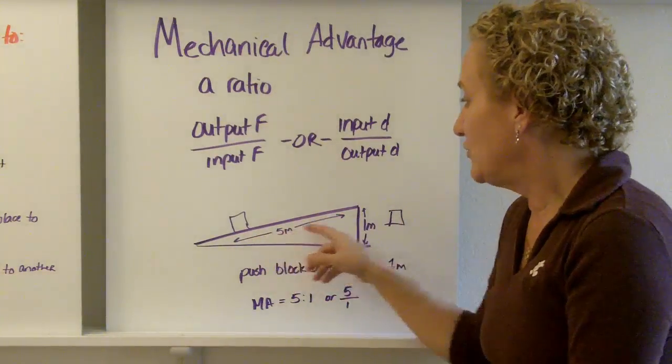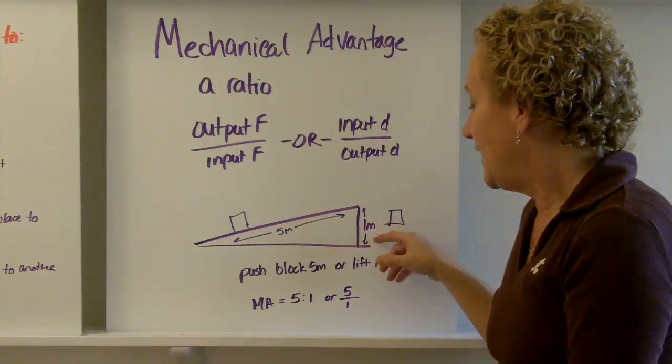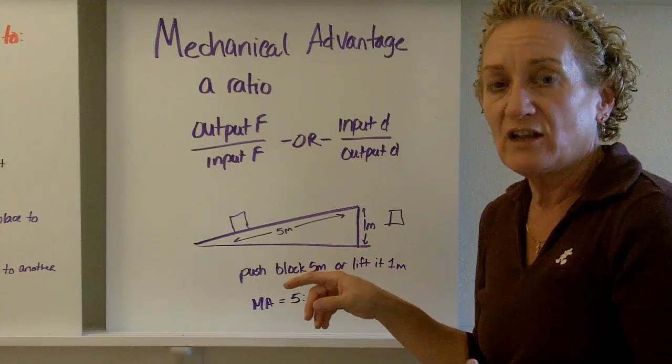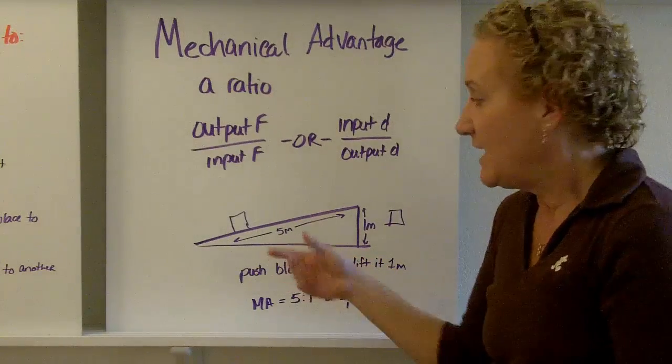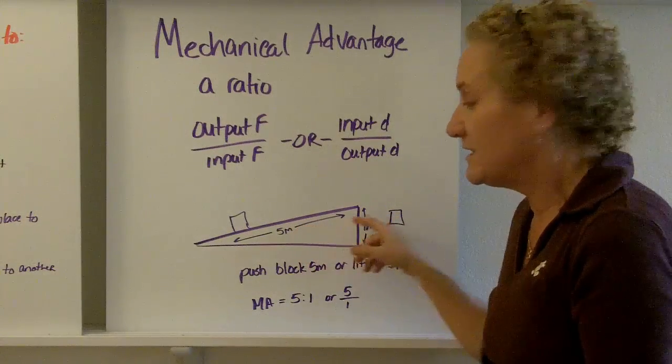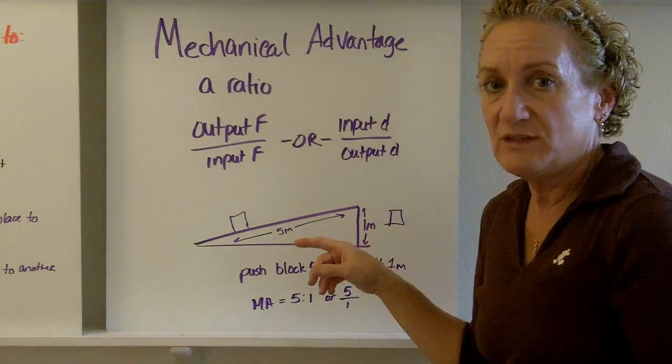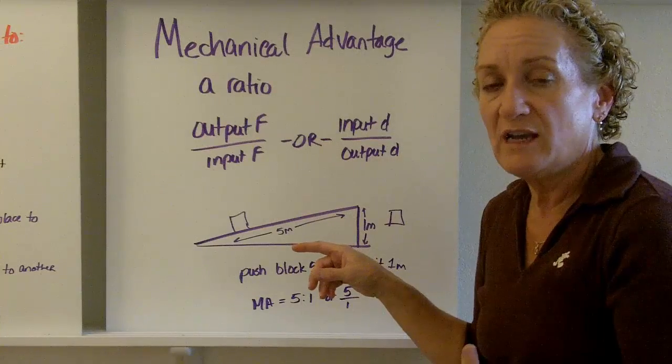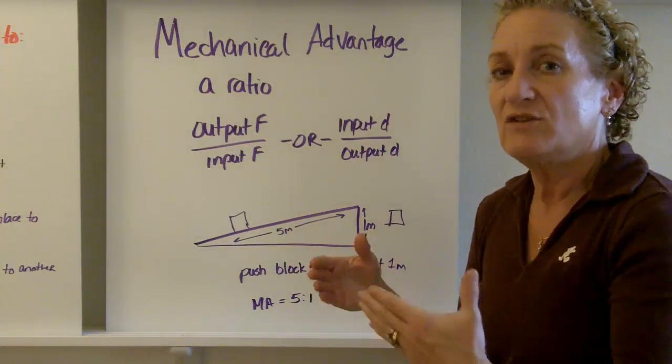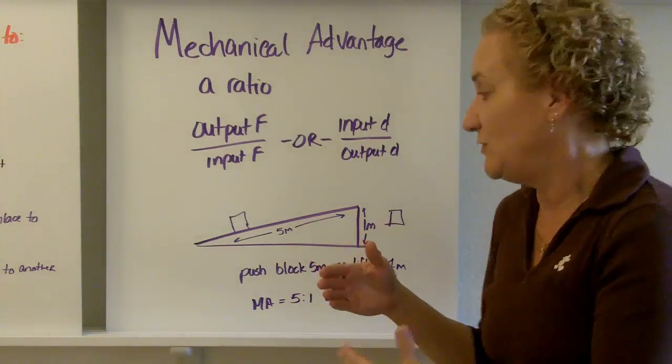So, we have 5 meters is what we're actually pushing it, as opposed to 1 meter, so it's a 5 to 1 ratio, or the mechanical advantage is 5 to 1. If this were 6, and this distance were 3, it'd be 6 to 3. Can you reduce that? Sure, you can say 2 to 1, and you can even say 2 if you understand that when you say 2, you're really saying the mechanical advantage is 2 to 1.